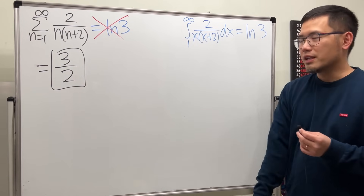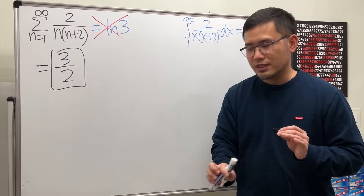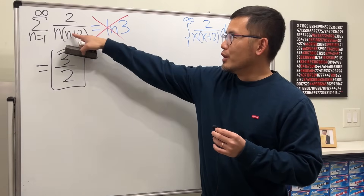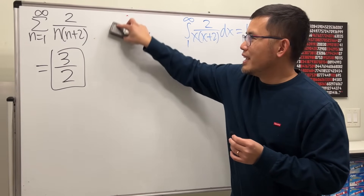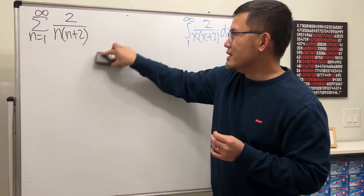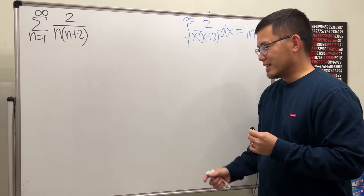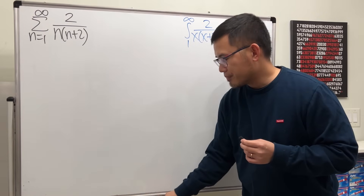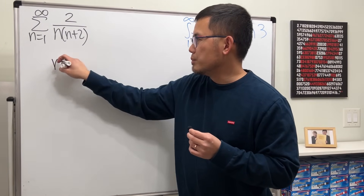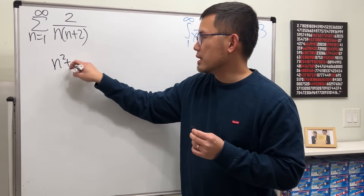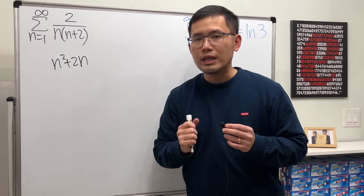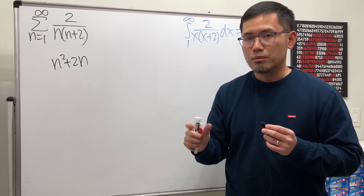Hopefully that's clear. I'll show you how to get from the series to the answer of 3 over 2, and I'll leave the improper integral to you. Originally, the denominator was given as n squared plus 2n. Make sure you factor it so that we can do partial fractions.